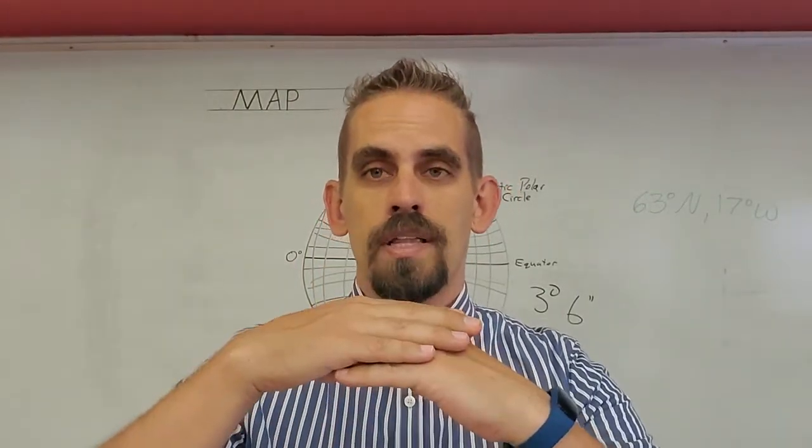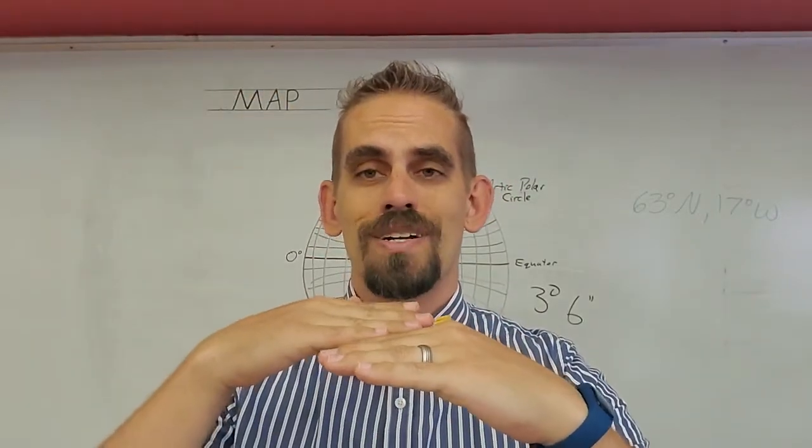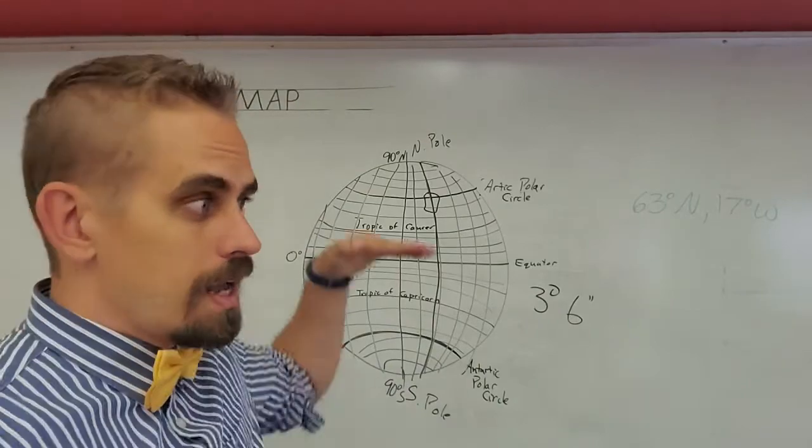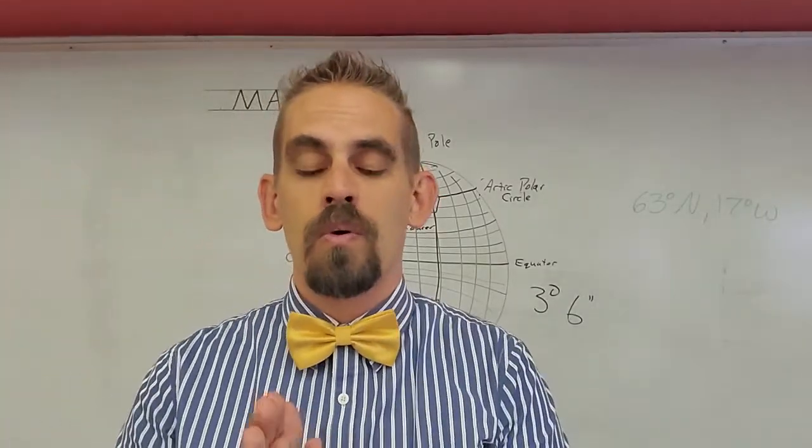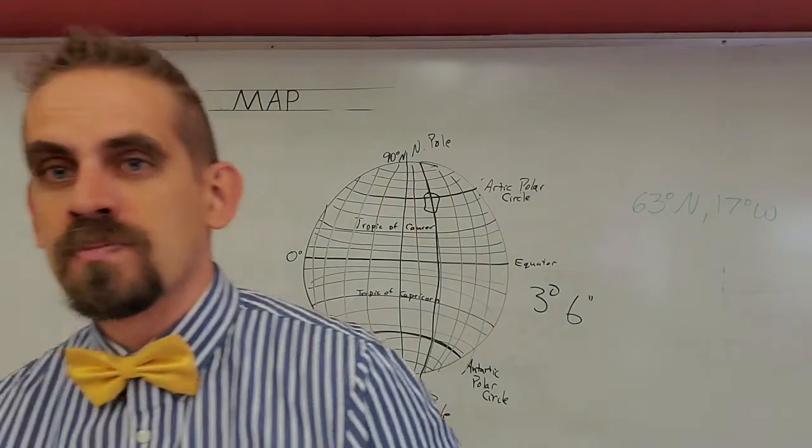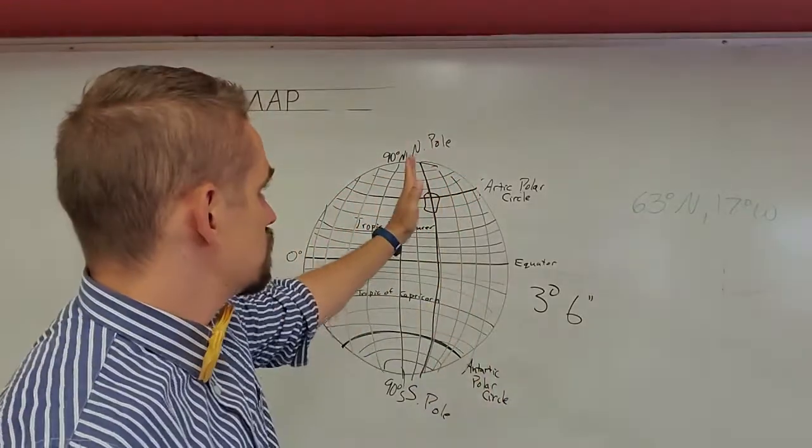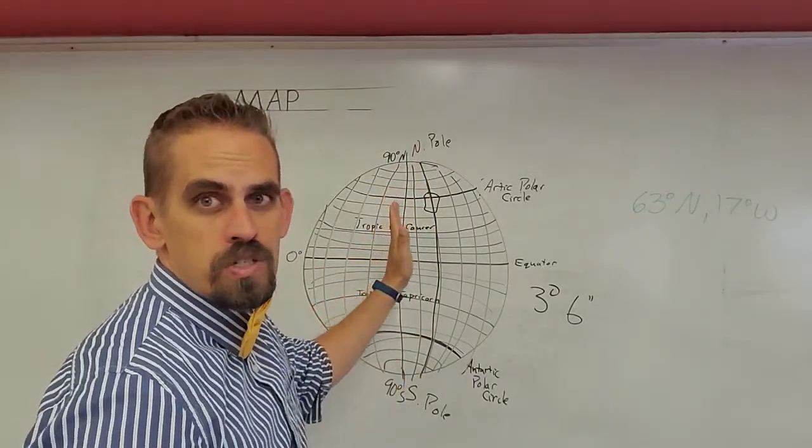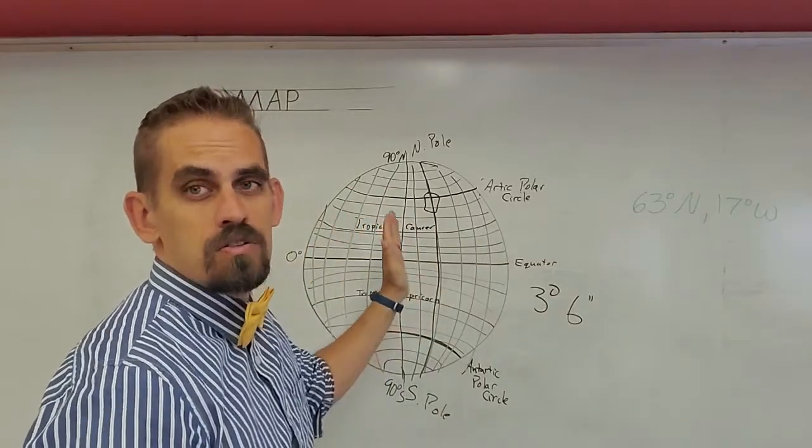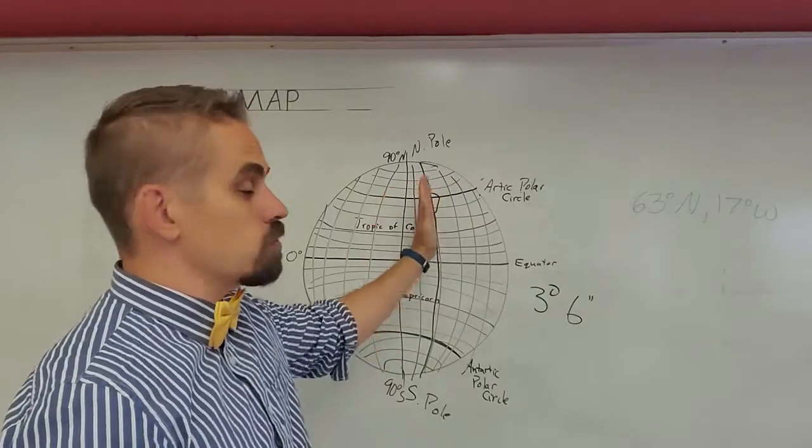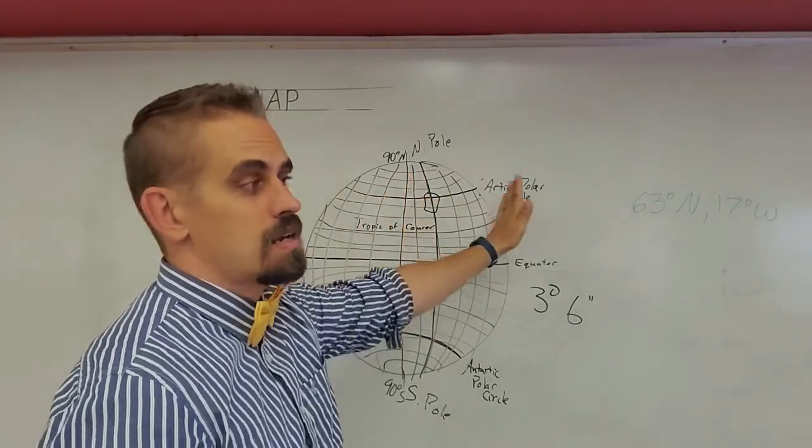So again, longitude and latitude. Latitude, you go either north or south. Latitude is measured in degrees and minutes north or south. So anytime you see 17 degrees north or 45 degrees south, that means north or south of the equator. And then longitude is there's an imaginary line. It goes through England, but it goes north-south. And then you can say either east of that or west of that. And it goes from 0 to 180 degrees.